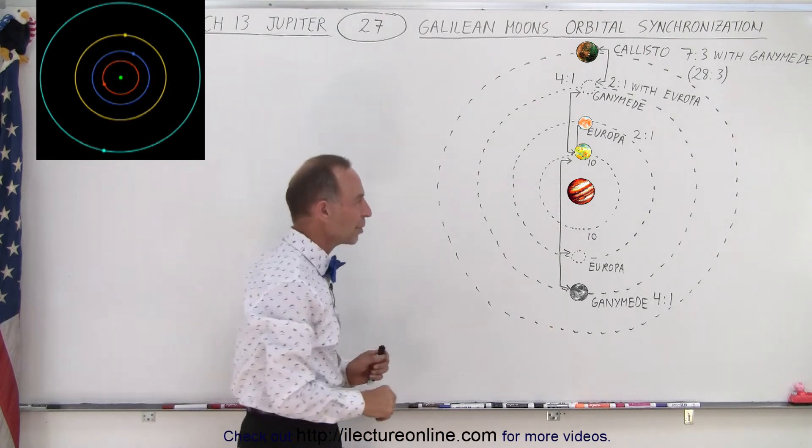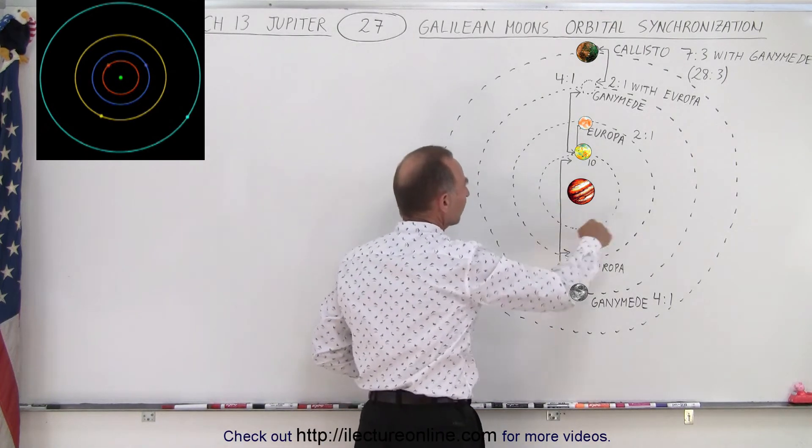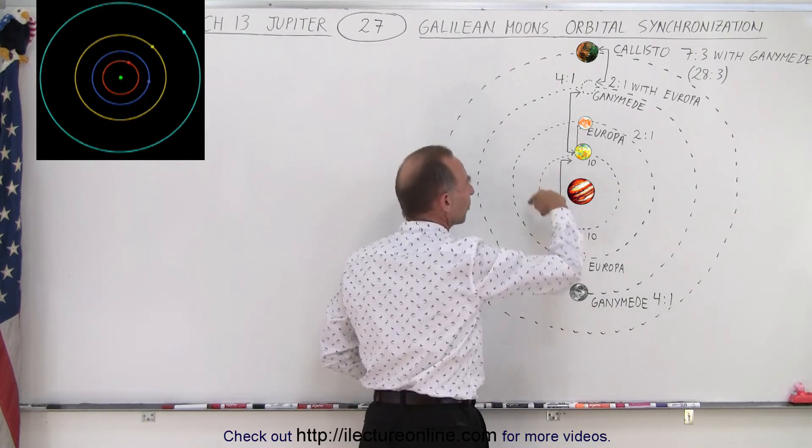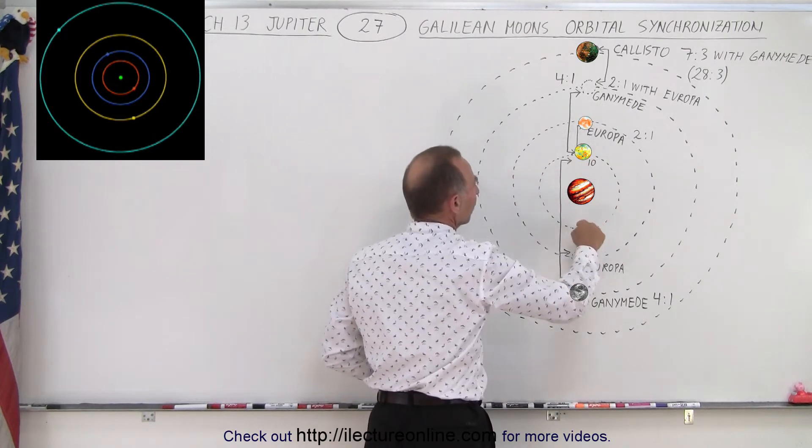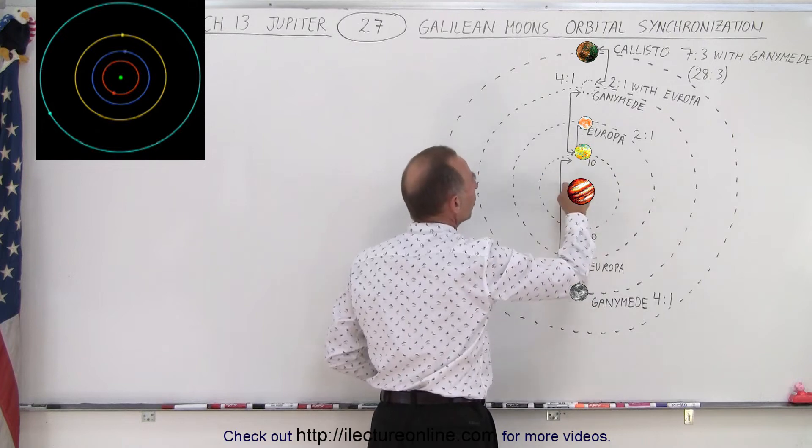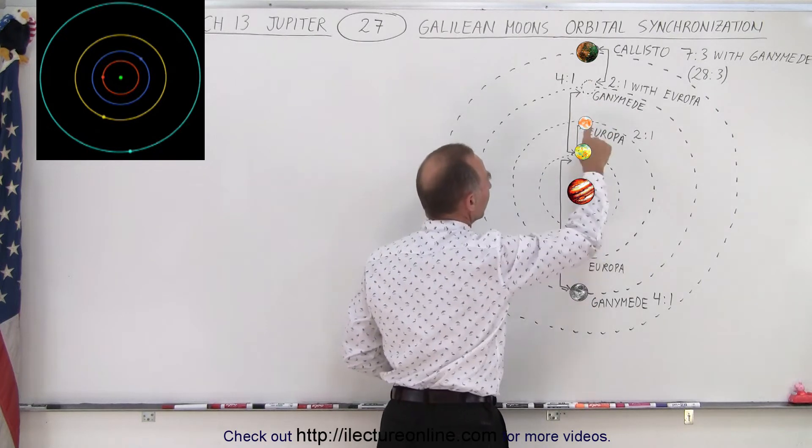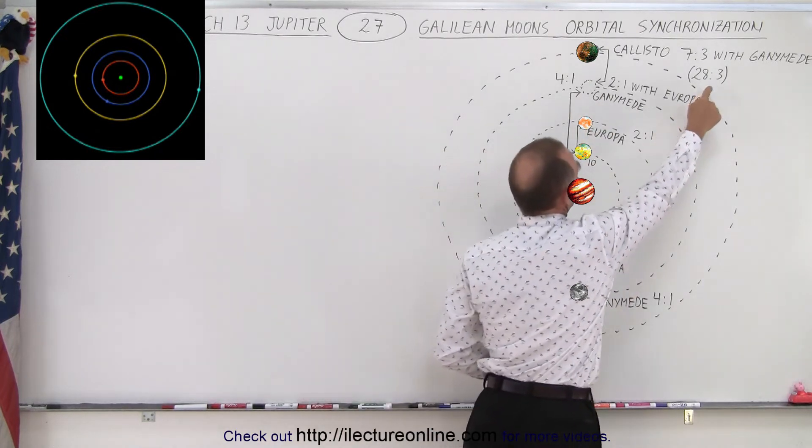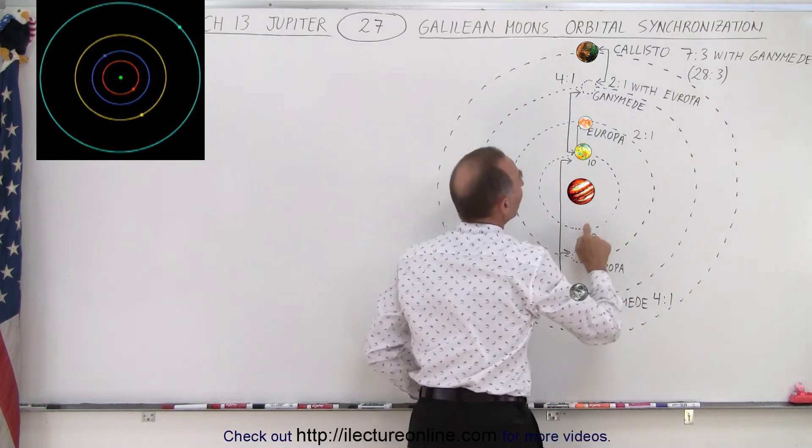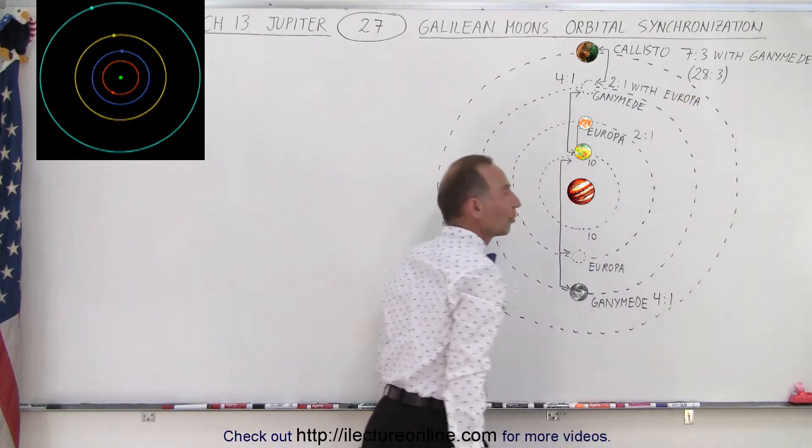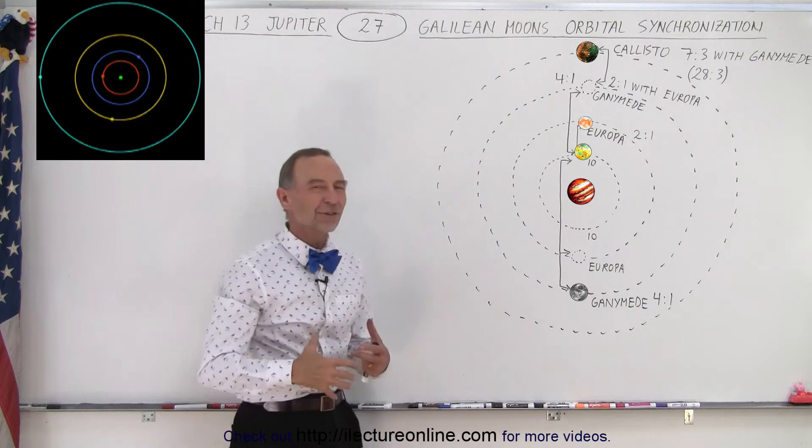So again, let's review. So I have Io going around. For every two orbits of Io, Europa will go around once. For every four trips of Io, Ganymede will go around once. For every three trips of Io, Callisto will go around 28 times. And that will just continue on.